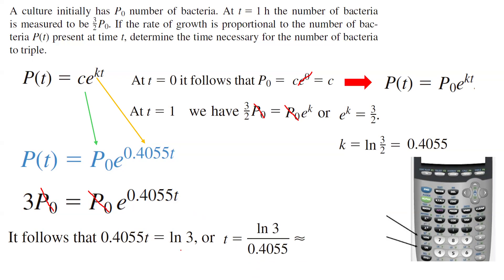Using a calculator, t is approximately 2.71 hours. Rounding, it is close to 3 hours. So after approximately 3 hours, the bacteria population will triple.